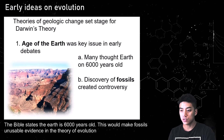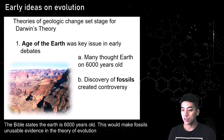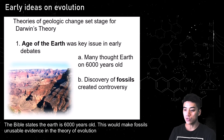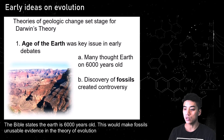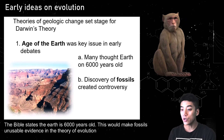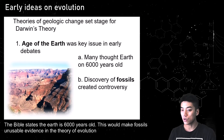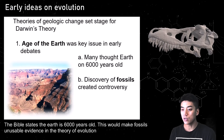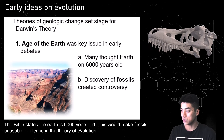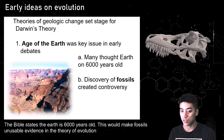The Bible states the earth is 6,000 years old, which would make fossil evidence unusable in the theory of evolution. If the earth is only 6,000 years old, this is not enough time for evolution to occur. There's also a misconception that human beings arose directly from a chimpanzee or monkey — the idea instead is that we arose from a common ancestor traceable back millions of years. Fossils can be carbon dated and are millions of years old, which contradicts what's stated in the Bible.